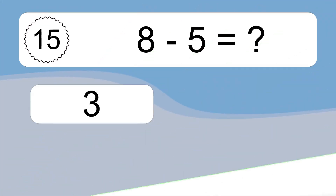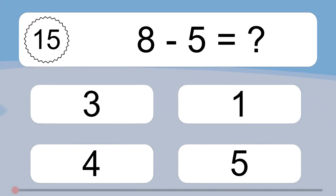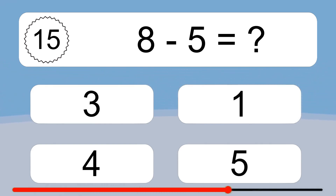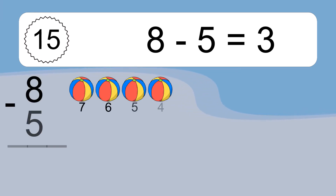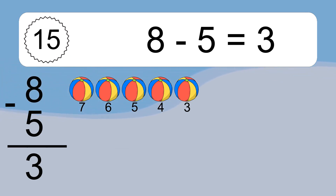8 minus 5 equals what? 8 minus 5 equals 3. Let's count it: 7, 6, 5, 4, 3.